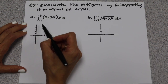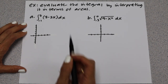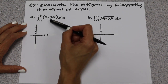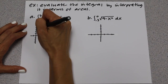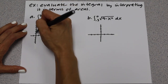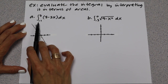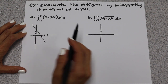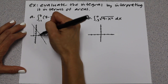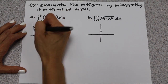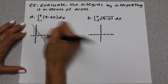Part A is the integral from negative 1 to 3 of the quantity (3 minus 2x) dx. The first thing I want to do is graph this function. You can see it's linear — you're going to go up 3 for your y-intercept, and then your slope is down 2 over 1. We're looking at this line from negative 1 to 3, and here is the area that we are talking about.